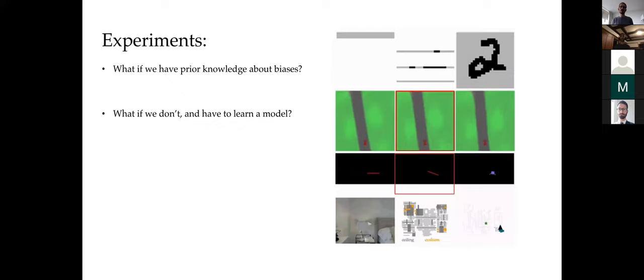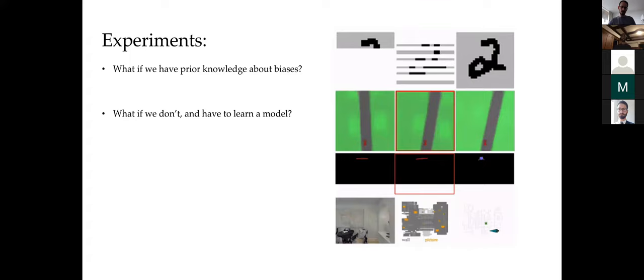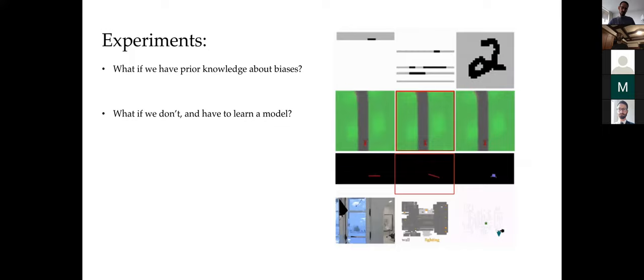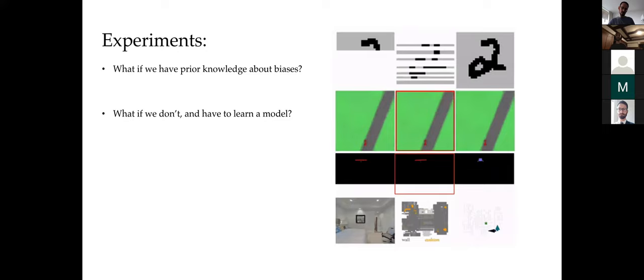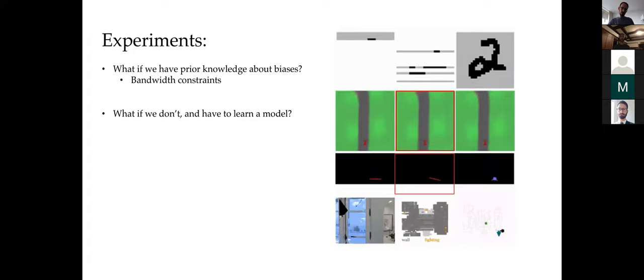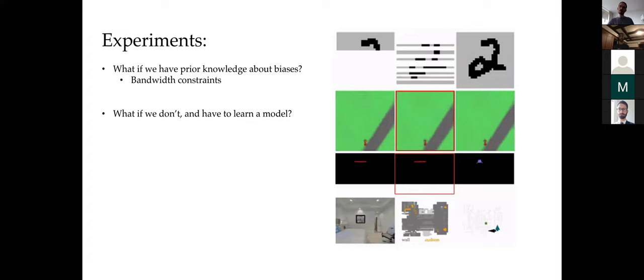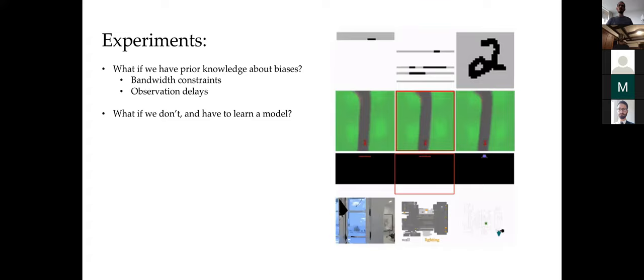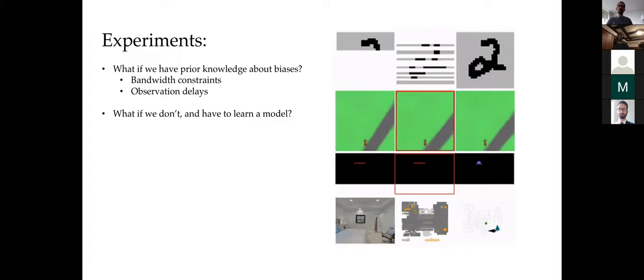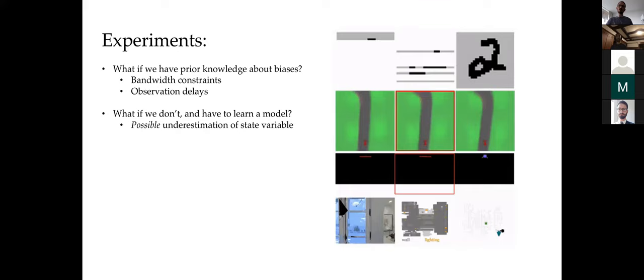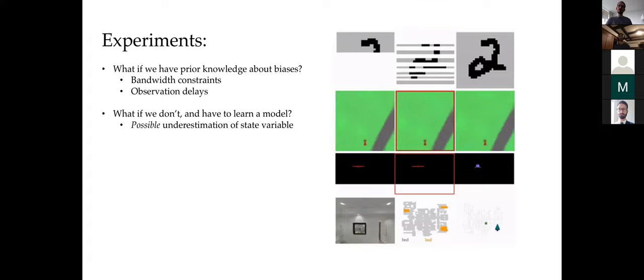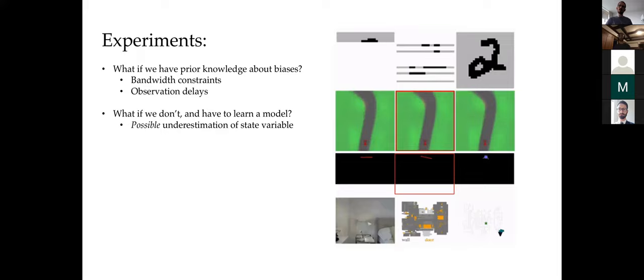In our experiments, we consider two types of tasks: tasks where we assume prior knowledge about how the user's state estimation is flawed, and tasks where we don't know the user's biases a priori and must learn a model. We look at MNIST and a car racing game domain where the user's perception is intentionally bandwidth constrained or subject to intermittent delays. We also look at a lunar lander game where users may consistently underestimate certain state variables, but we're not sure exactly when or to what degree.